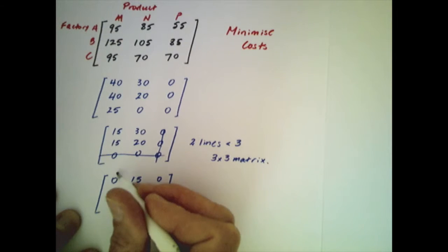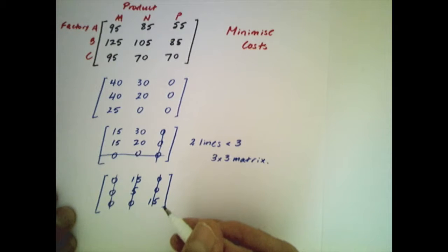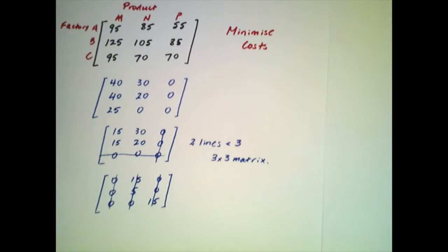Once we've done that we repeat the process as before and look to cross out the zeros using a minimum number of horizontal and vertical lines. This time we've achieved it with three lines and because it's a three by three matrix we can actually stop at this point as far as that process is concerned. We're now ready to actually determine the minimum cost.